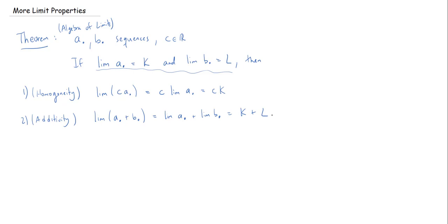Now I'll add multiplicativity. Instead of adding two sequences together, I multiply them together term by term to get a new sequence. That new sequence converges, and it converges to precisely the product of the limits of the original sequences — in this case K times L.